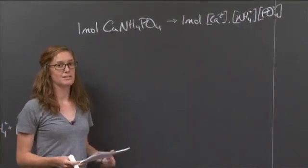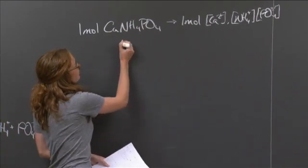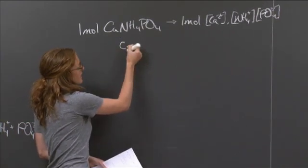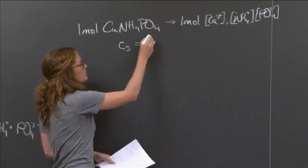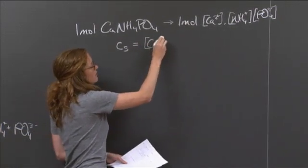Thus, we can say the amount of calcium ammonium phosphate dissolved, which we called Cs, is going to be equivalent to each of these concentrations.